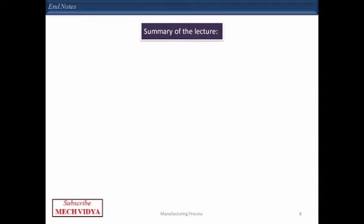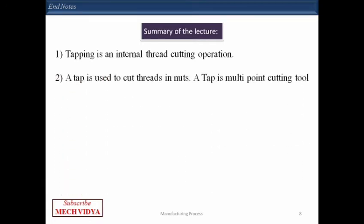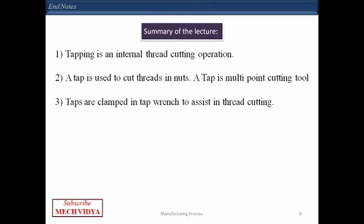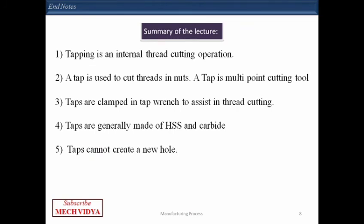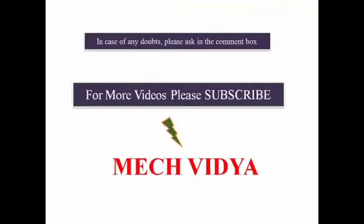To summarize: tapping is an internal thread cutting operation. A tap is a multi-point cutting tool used to cut threads in nuts. You cannot do this by hand — the tap must be clamped in a tap wrench. Taps are usually made of high speed steel or carbide. Most importantly, tapping cannot create a new hole; it is only used for cutting internal threads in an existing hole.